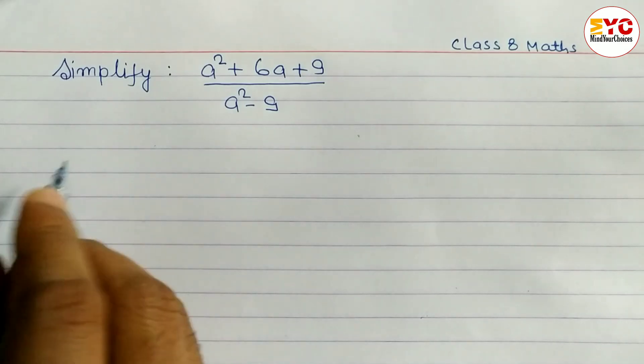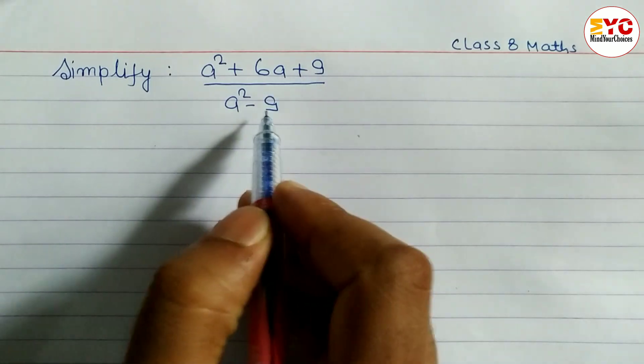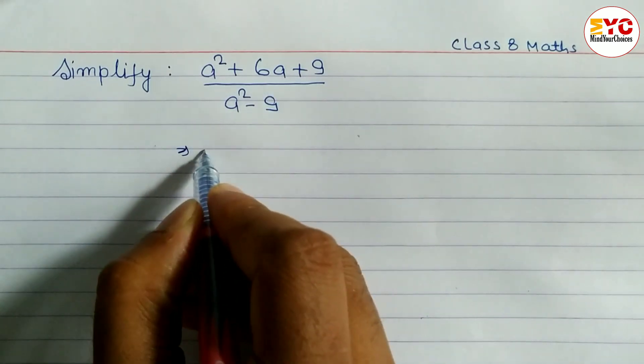In this video we will learn how to simplify. You can see here we have expression a square plus 6a plus 9 by a square minus 9. Let's take a start.